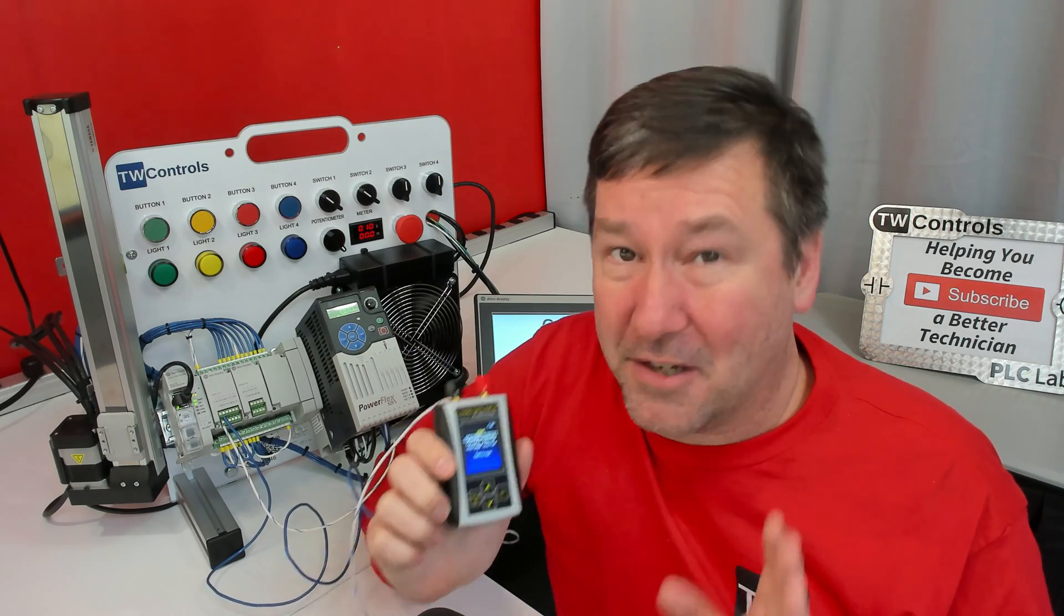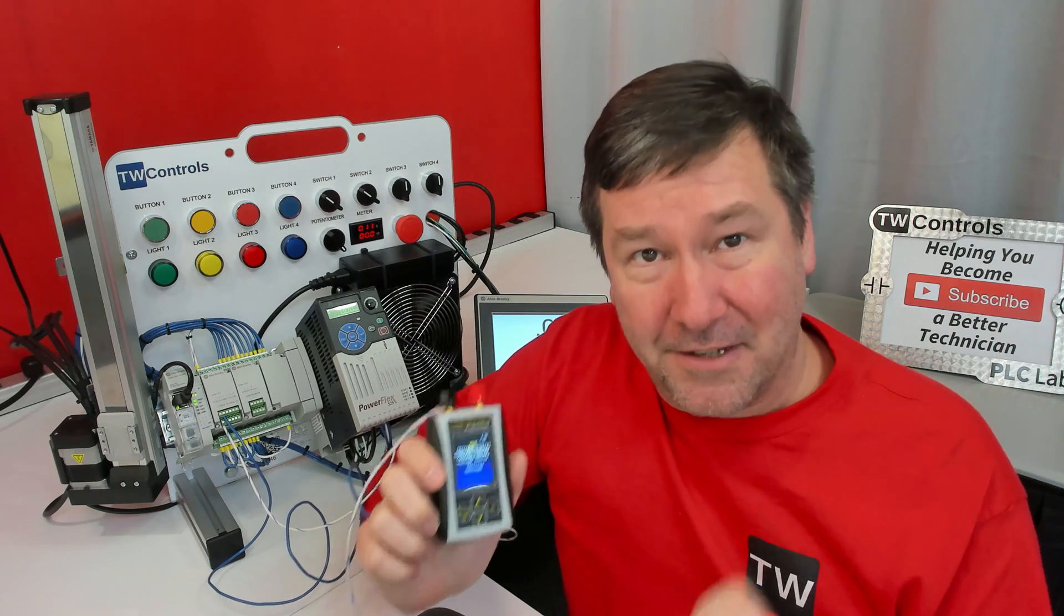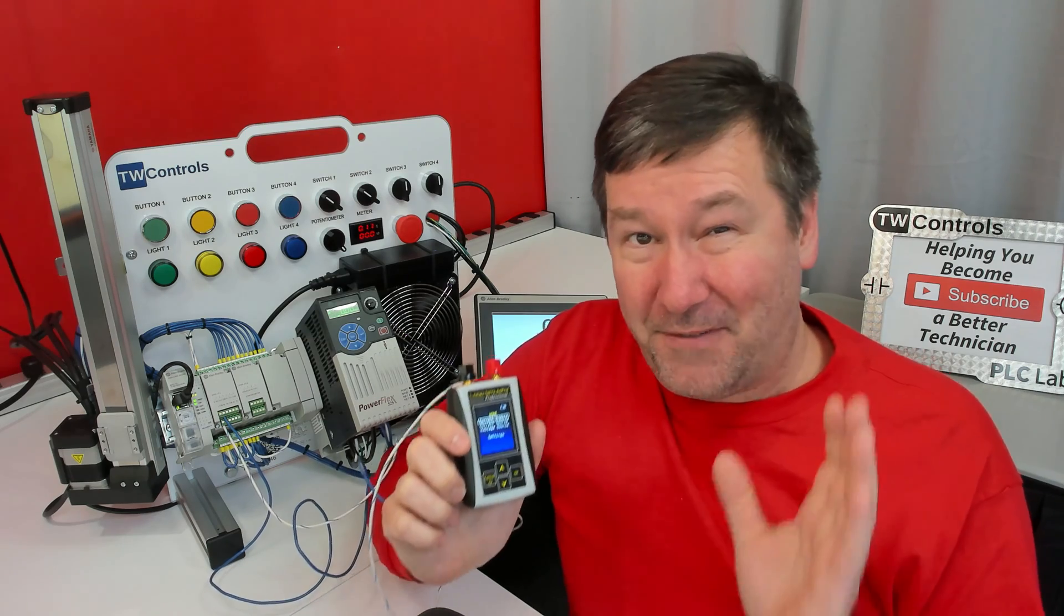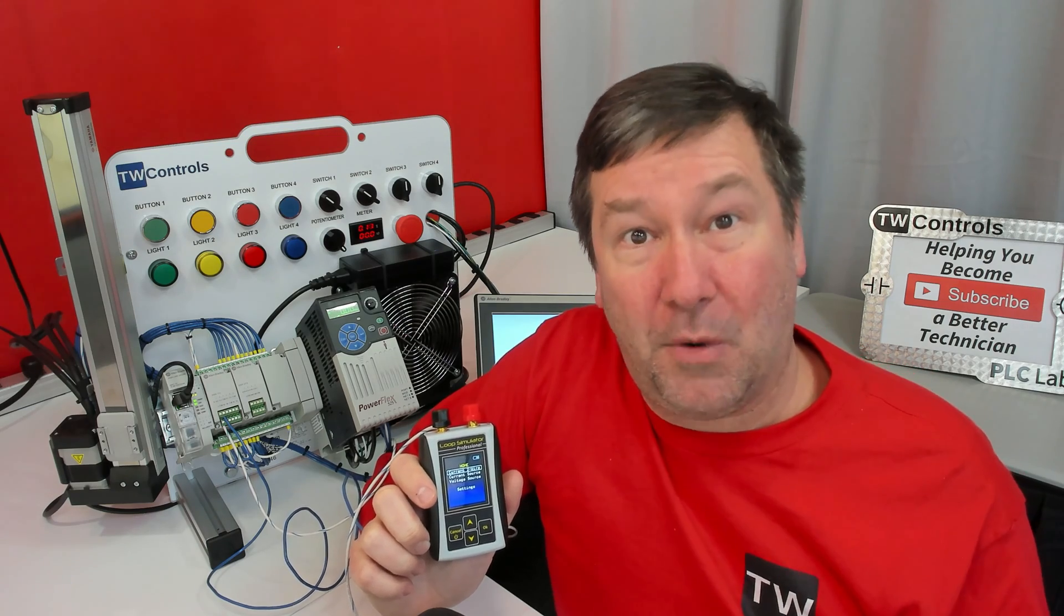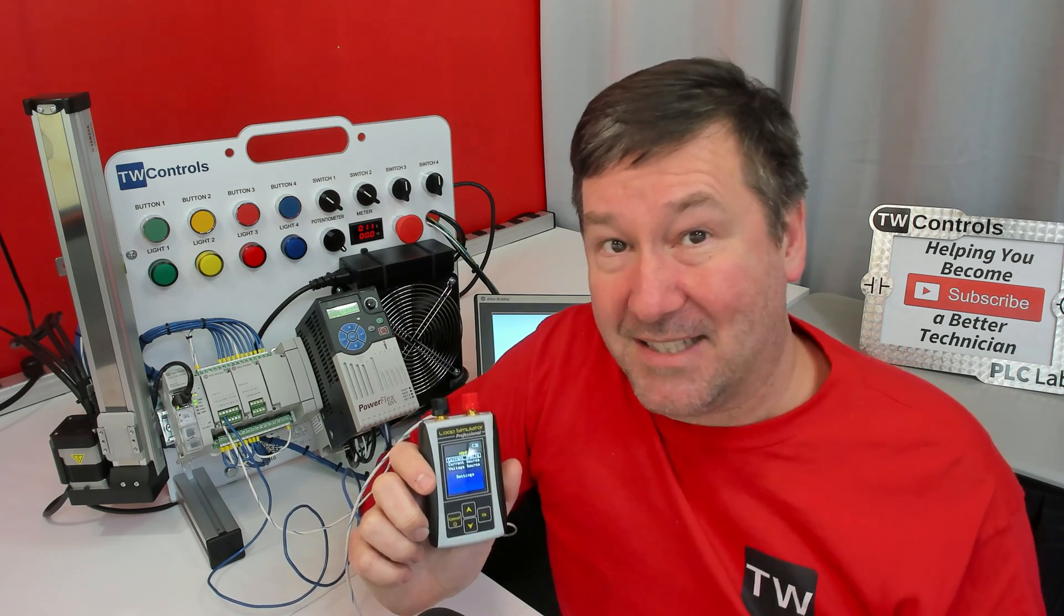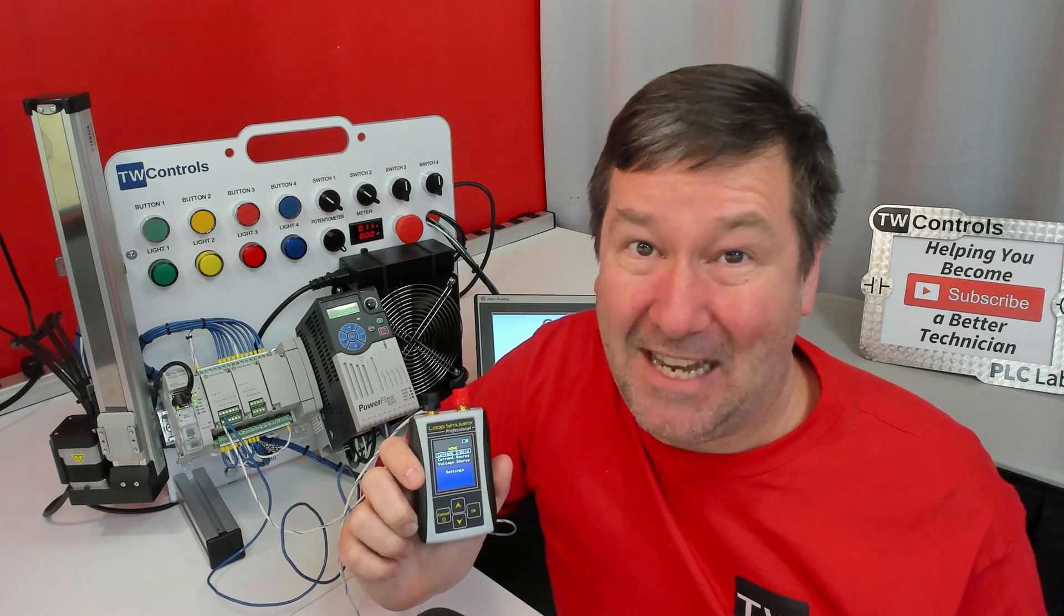Now, current source and current two-wire can be very confusing. Here's a few tips. First of all, interchangeably in your manual, you may see the words current two-wire, current loop, passively powered, or externally powered. They mean the same thing.